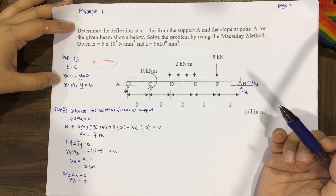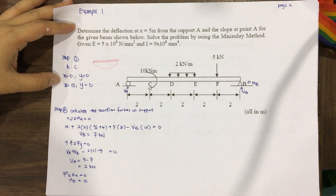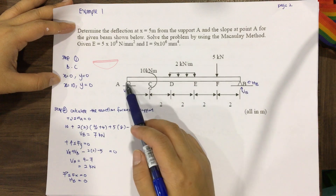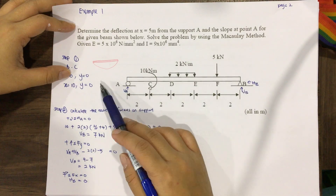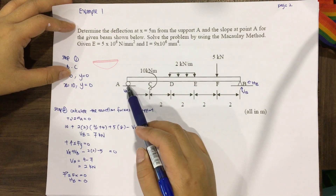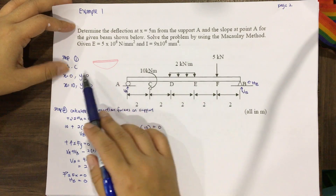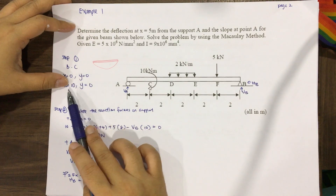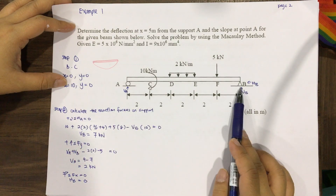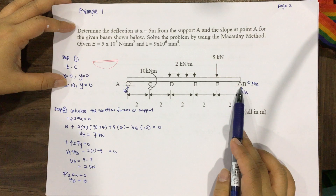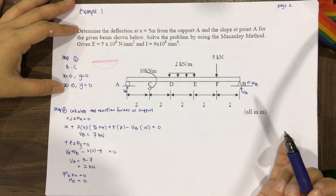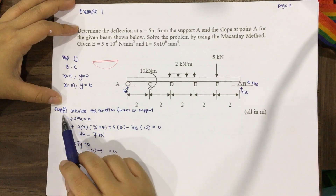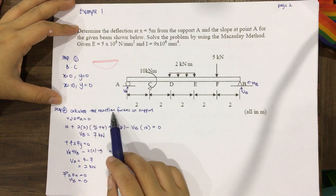From the first step we look at this beam and need to identify the boundary conditions. This is a simply supported beam, so we know that at the supports the deflection y is zero. When x equals zero, y equals zero, and when x equals 10, which is support B, y also equals zero.